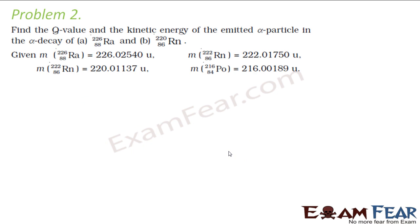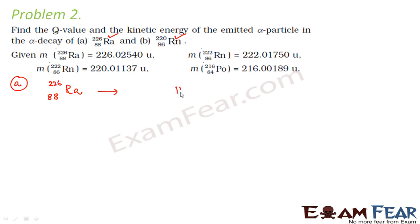Now let us look at the next problem. It says: find the Q value and the kinetic energy of the emitted alpha particle in the alpha decay of radium. I will solve for radium-226, and for the other case you have to solve it on your own. It is talking about alpha decay, so let us write down the reaction for alpha decay of radium-226. In alpha decay, an alpha particle will be emitted.